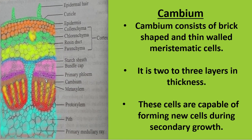The cambium consists of brick-shaped, thin-walled meristematic cells, occurring in 2 to 3 layers of thickness. These cells are capable of forming new cells during secondary growth. Meristematic cells have the capacity to divide continuously without interruption.